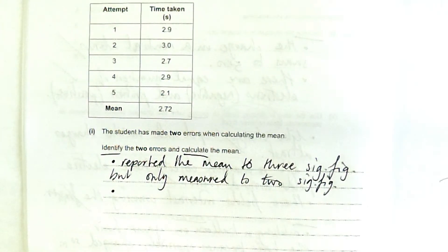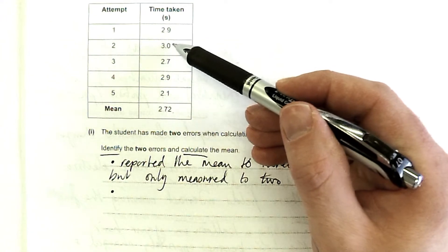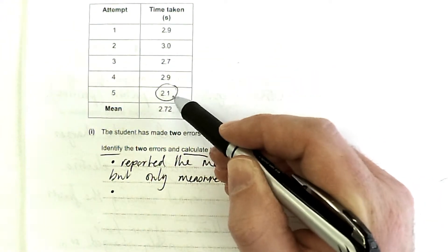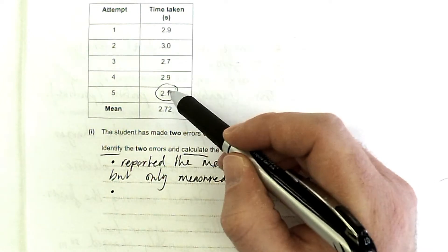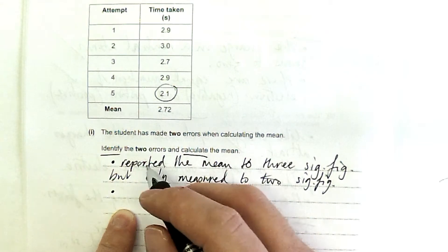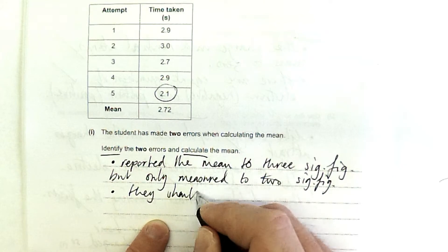What else have they done? Well, let's have a little look at how spread out they are. They're all pretty close but that's three and that's almost two. That is an outlier. That's an anomaly, isn't it, when we look down that data. So they probably should have excluded attempt five from their mean as it is an anomaly.